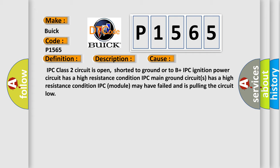IPC class two circuit is open, shorted to ground or to B plus. IPC ignition power circuit has a high resistance condition. IPC module may have failed and is pulling the circuit low.